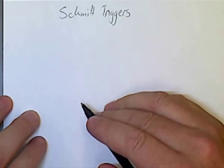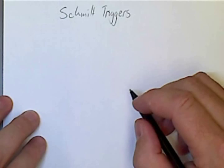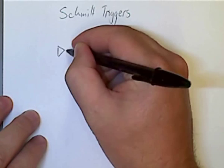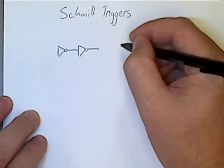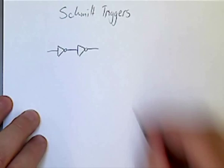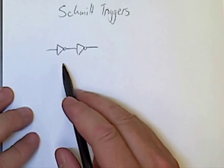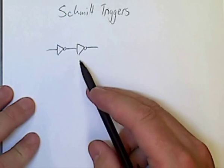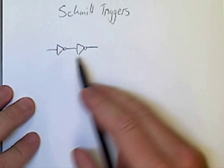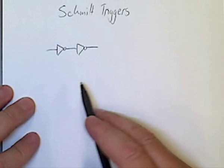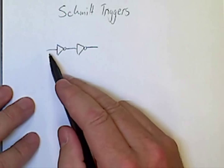We can create a Schmitt trigger by simply using a buffer circuit or two inverters connected together in series. Two inverters connected together in series will create a buffer circuit. We'll examine what the behavior of this is before we go into actual Schmitt triggers. A buffer is not a Schmitt trigger or a Schmitt device. It is simply an input where the logical input is equal to the logical output.